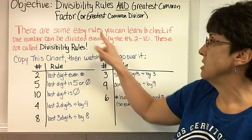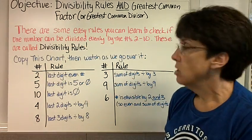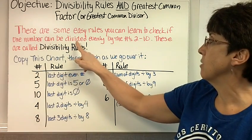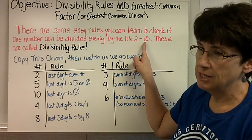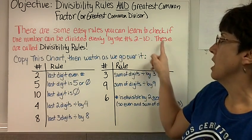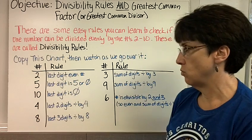There are some easy rules you can learn to check if one number can be divided evenly by the numbers 2 through 10, really except 7, we're not doing 7. These are called divisibility rules.